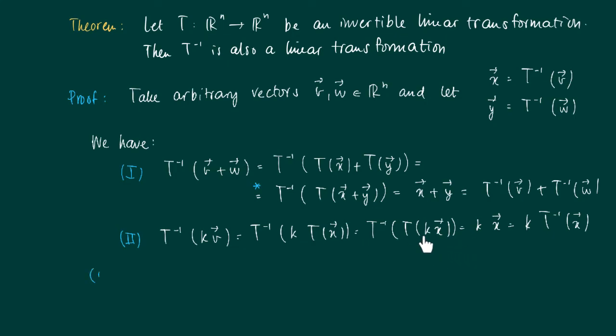And now again we have T inverse times T, which equals the identity. K of X is K times T^(-1)(X), so now we have the first two properties, the essential properties for a linear transformation. So T inverse is a linear transformation.